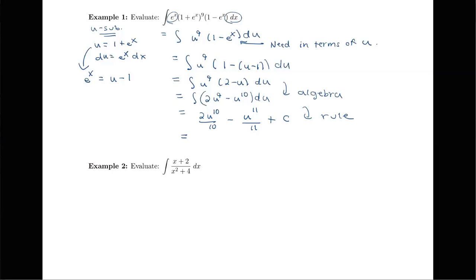Now in the last step, I need to put this back in terms of x since the original integral was in dx. Replacing u by 1 plus e to the x and simplifying: 2 over 10 becomes 1 over 5, giving us 1 over 5 times 1 plus e to the x to the 10th, minus 1 plus e to the x to the 11th all over 11, plus C. That is the final answer for this problem.